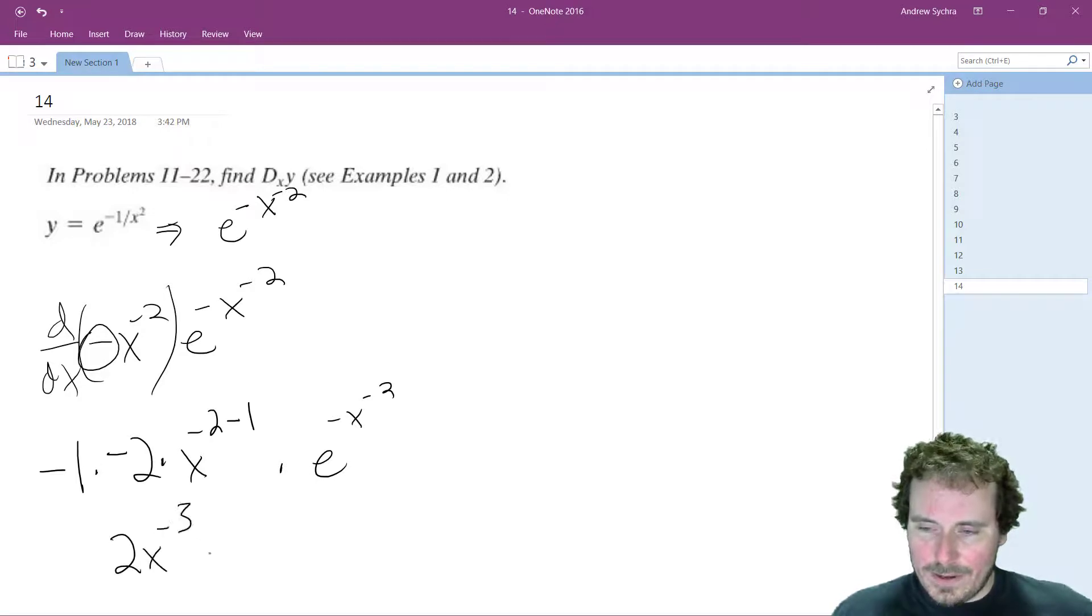So what we end up with is positive 2 x raised to the negative 3 and then e raised to the... if you want you can change this back to the original negative 1 over x squared. The reason I did that is it's just easier to see it.